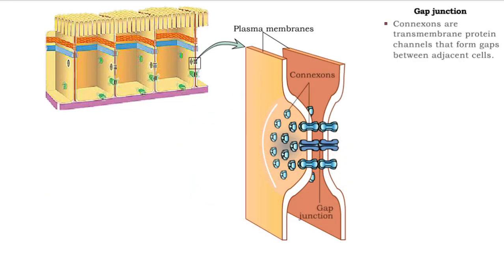The gap junction is an open communication channel. Transmembrane proteins, called connexons, join together to create tiny tunnels that form gaps between the adjacent membranes.